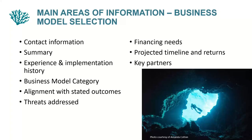The next slide goes into detail on the categories of information we're looking for in the business model survey: contact information, a concise summary paragraph of the entire concept, your experience and implementation, describing the business model using our category system, alignment with the stated outcomes of the fund, how the model will address the threats, what level of financing needs the project or business model will have, projected timeline and projected returns — if it's early stage just provide what you have — and key partners.